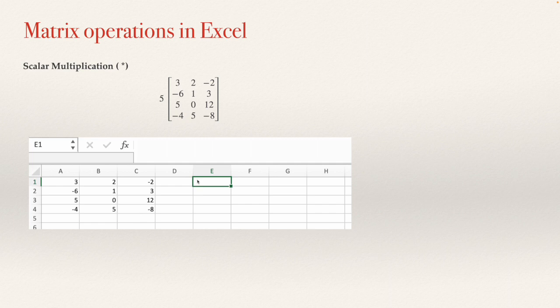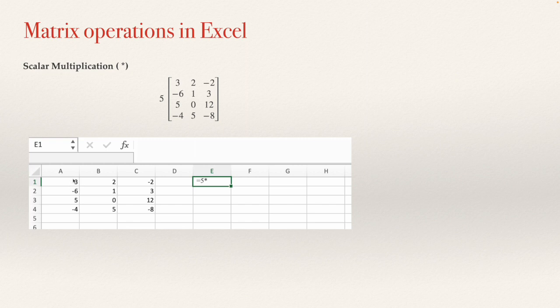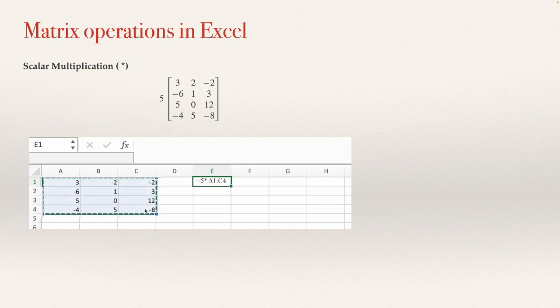Choose which cell you want to see the answer from. In that cell, type equal 5, because you are going to multiply 5 by this matrix, and then select the matrix. Another way is typing the first cell, A1, then a colon, and then the last cell, C4. If you select the matrix, A1:C4 appears.